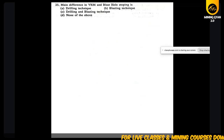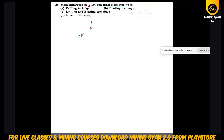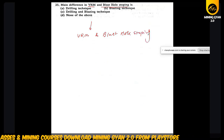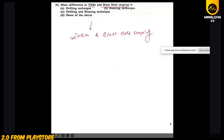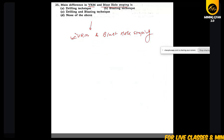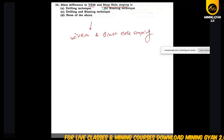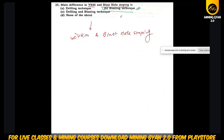The main difference between the VCR method and blast hole stoping method: both methods have a similar drilling technique, but they differ because of their blasting technique. So both use different types of blasting technique — that is the main difference.